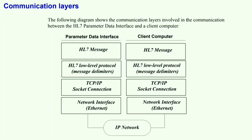Communication layers: The following diagram shows the communication layers involved in the communication between the HL7 Parameter Data Interface and a client computer. You can see the parameter interface and the client computer interface. The layers include HL7 messages, then HL7 low-level protocols, then TCP/IP, then a network interface, then the IP network, and then it goes to the client computer, with the same layers on the client side.